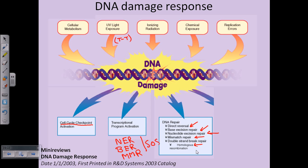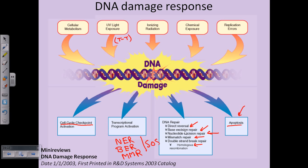Homologous recombination can also restore DNA damage. If the cell fails to properly repair the DNA damage, the cell chooses either an error-prone repair pathway — where it adapts and works with the damage carrying the mutation — or the apoptosis pathway. Apoptosis means programmed cell death. The cell will die via intrinsic and extrinsic pathways, killing itself to prevent further damage.